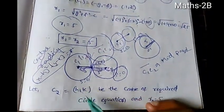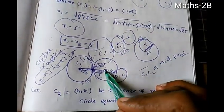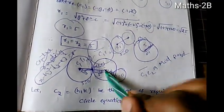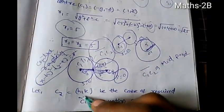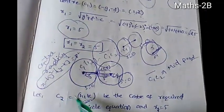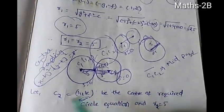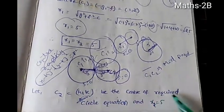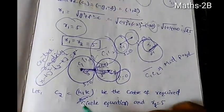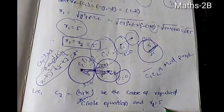Let C2 be the center of the required circle, equal to (h, k). The radius r2 equals 5. We need to find the center (h, k) of the second circle.